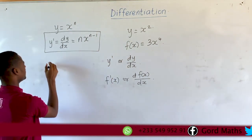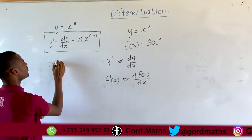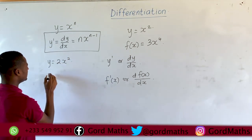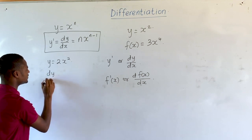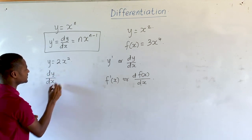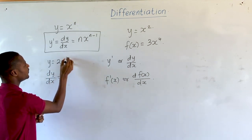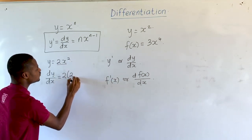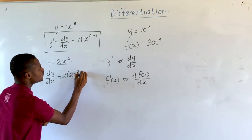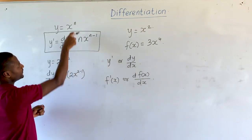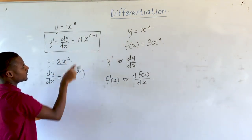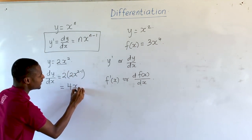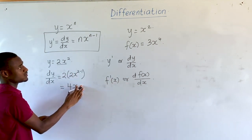Therefore, if we have a function y is equal to 2x squared, then the derivative, which is dy/dx, is equal to 2 times 2x raised to the power 2 minus 1. We multiply the whole function by the power and then subtract 1. This gives us 4x raised to the power 1, which is just 4x.